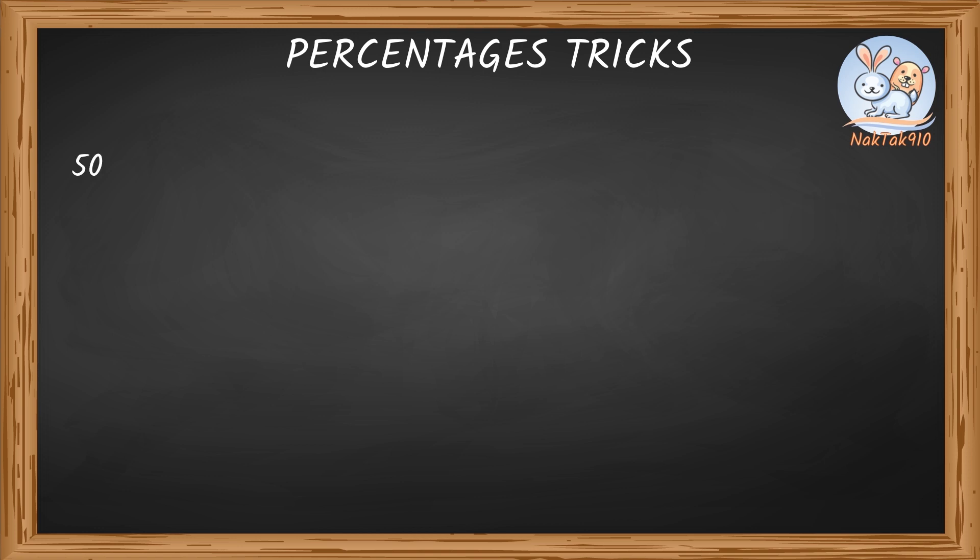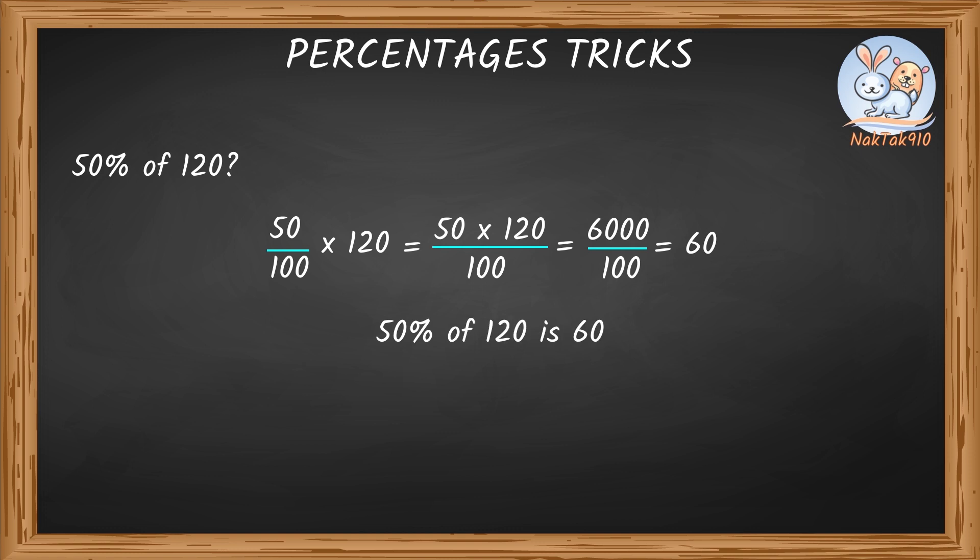Now tell me what is 50% of 120. Okay, let me calculate this. 50 by 100 times 120 equals 50 times 120 by 100 equals 6,000 by 100 equals 60. So 50% of 120 is 60.